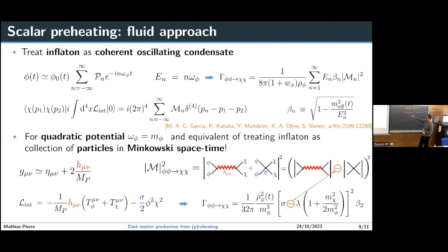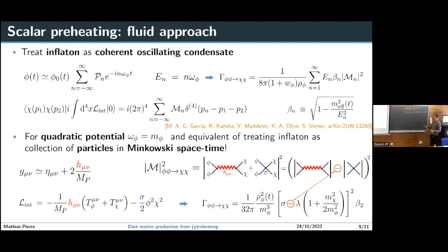Looking at these two contributions, they typically come with opposite signs — corresponding to dark matter production rates with terms essentially opposite to each other. You can see the direct coupling sigma corresponding to the direct coupling channel, and the lambda parameter corresponding to the gravitational contribution to dark matter production. Already here you can see that if lambda is very close to sigma these terms tend to be extremely suppressed due to interference. This is the first way of computing the dark matter production in this context.